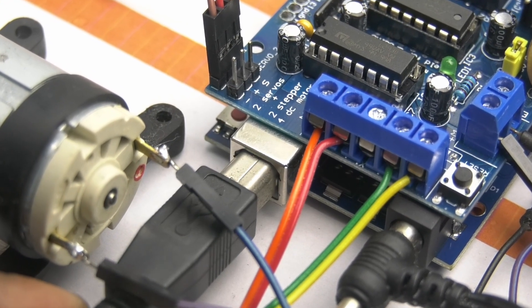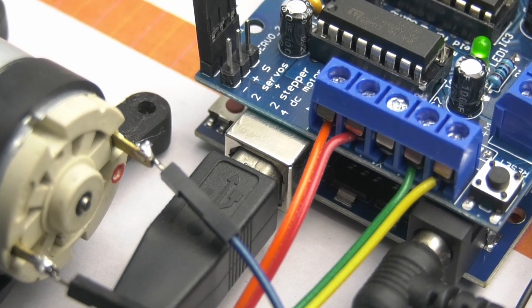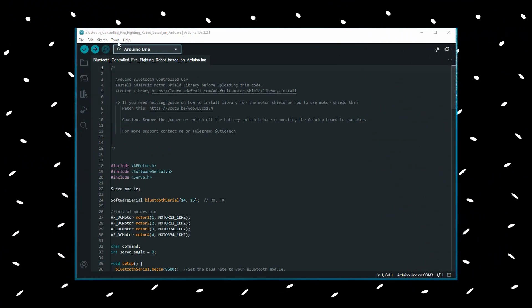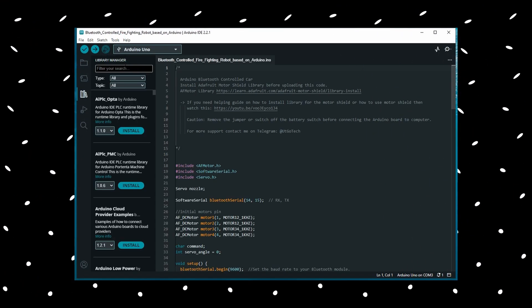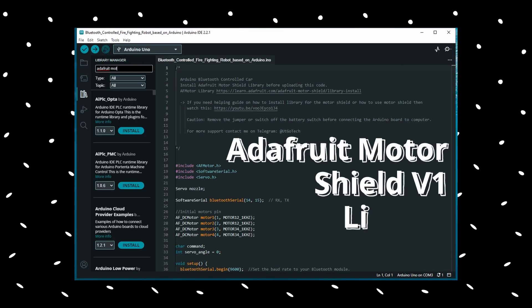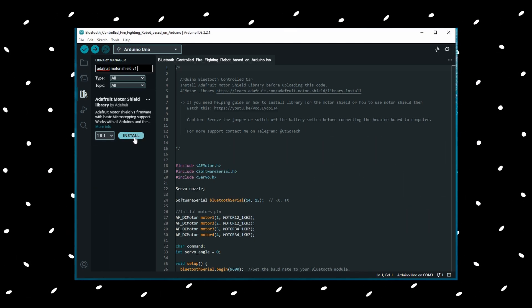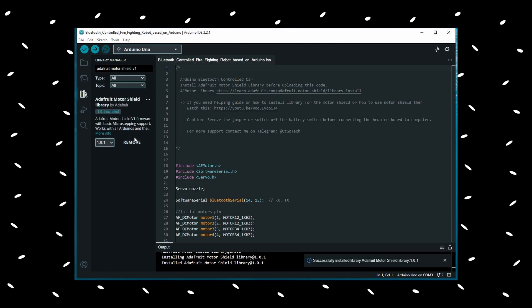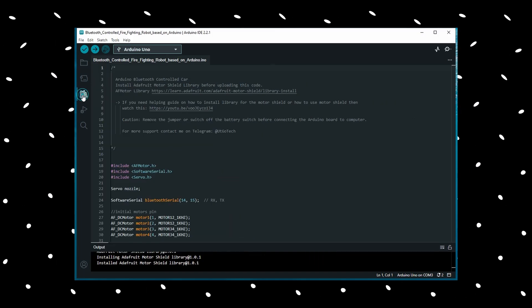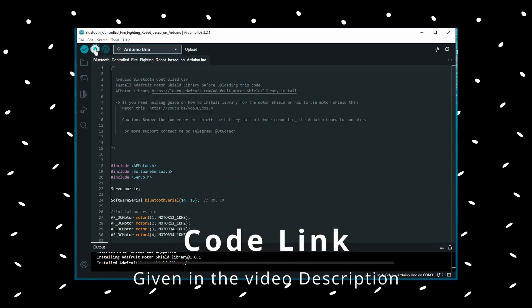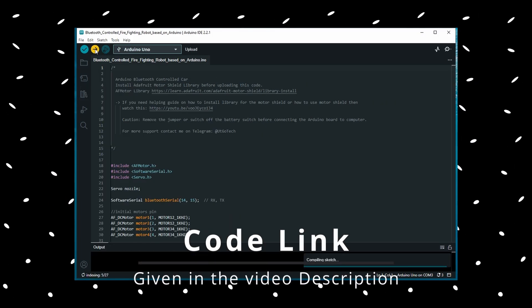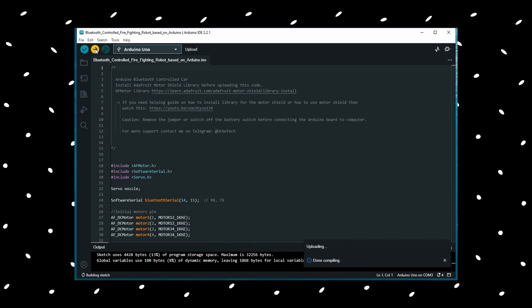Now, it's time to upload the code. For that, connect the Arduino board to computer. Then, in the Arduino IDE, open library manager and search for Adafruit motor shield v1 library and install it. After that, upload the code and then disconnect the USB cable after successful upload.